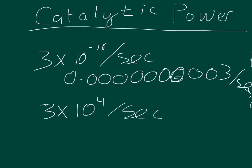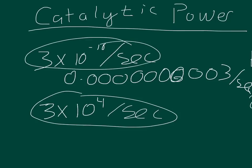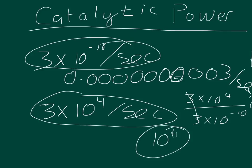And so the catalytic power is actually defined as the ratio of the catalyzed reaction to the uncatalyzed reaction. So basically it's 3 times 10 to the fourth divided by 3 times 10 to the negative 10th. And the 3's cancel out, you actually get an answer of 10 to the 14th. 10 to the 14th is the catalytic power of urease, the enzyme urease.